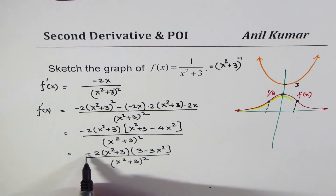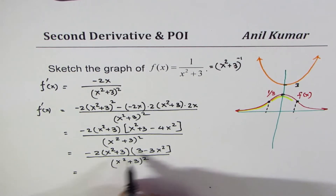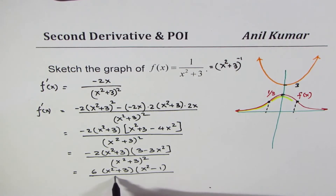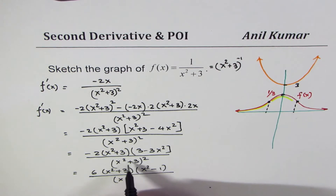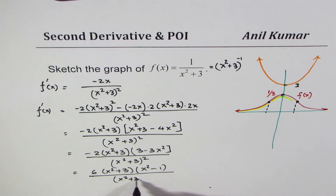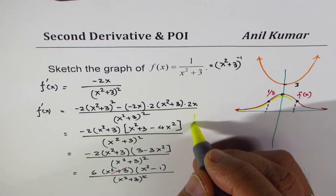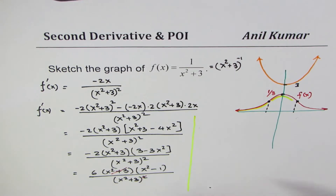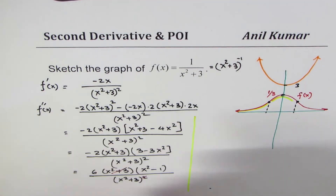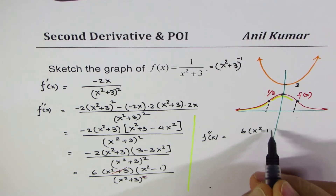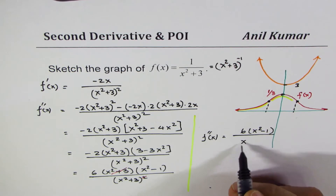Taking −3 common from (3 − 3x²) gives 6(x² − 1). Canceling one factor of (x² + 3) from numerator and denominator, the final expression for the second derivative is: f''(x) = 6(x² − 1) over (x² + 3)³.